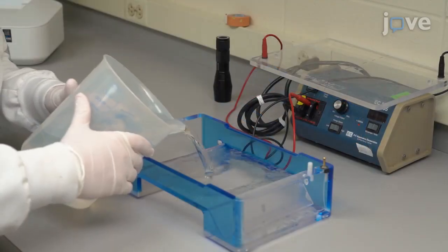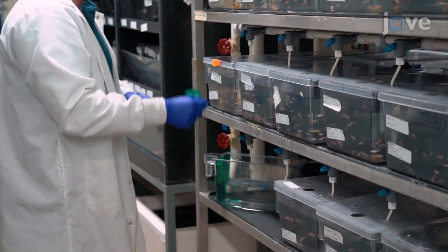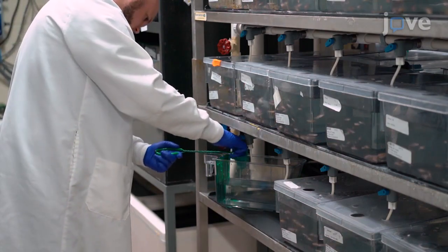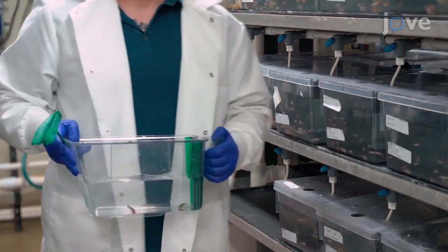After adding 800 ml of system water to the Shuttlebox, place 2-3 fish into a holding tank containing system water. Leave the tank in the dark room where the Shuttlebox assay will be performed.